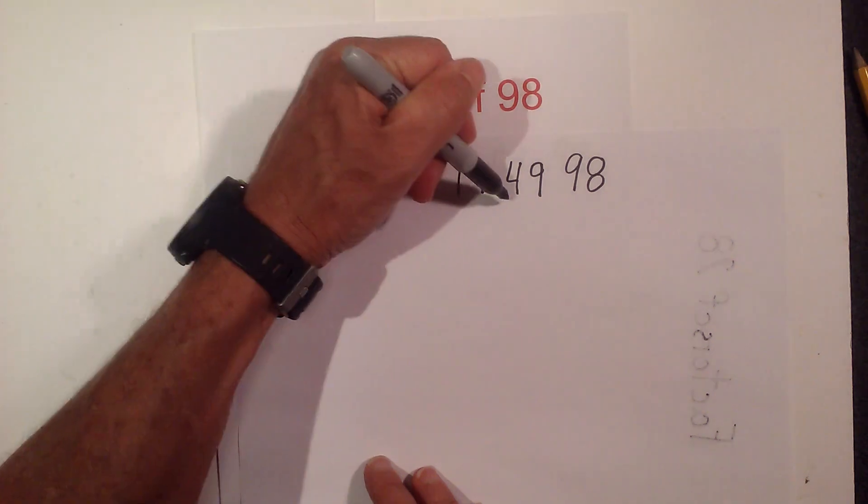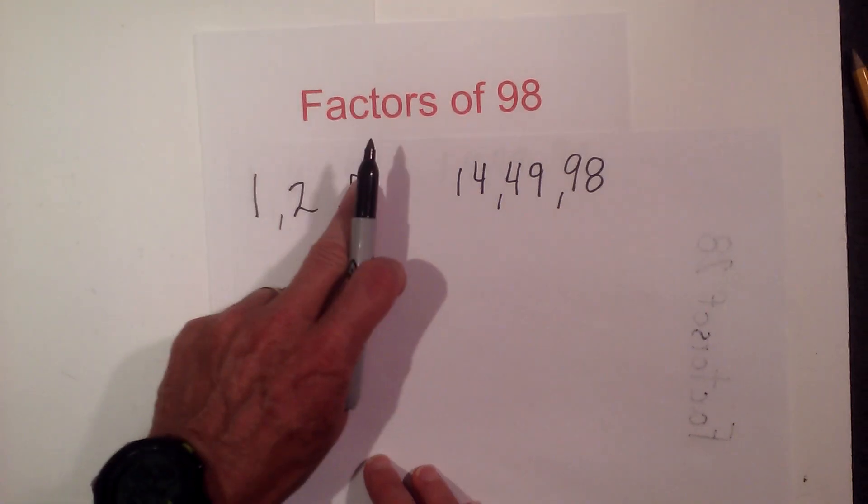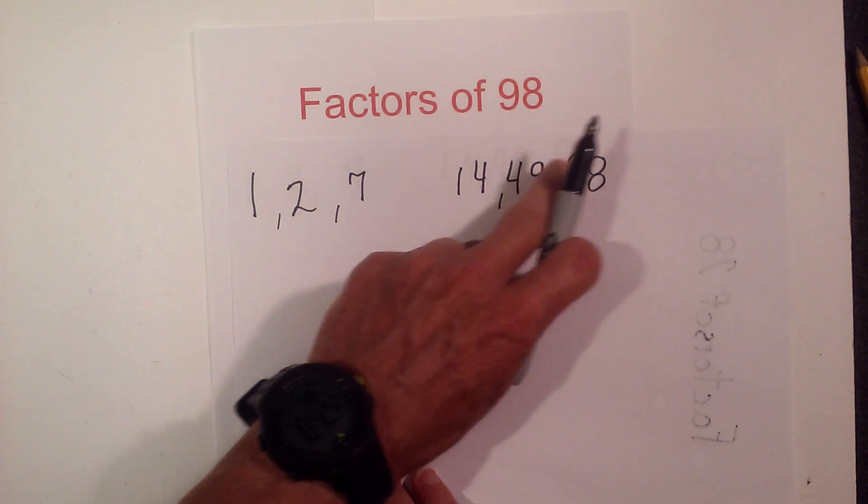So the factors of 98 are as follows: 1, 2, 7, 14, 49, and 98.